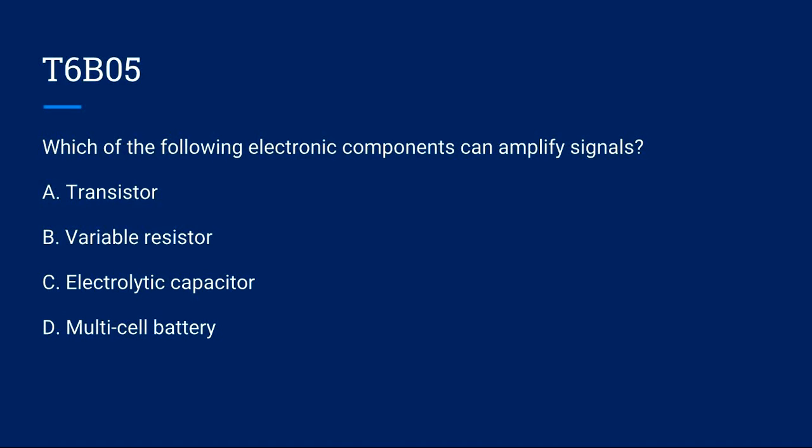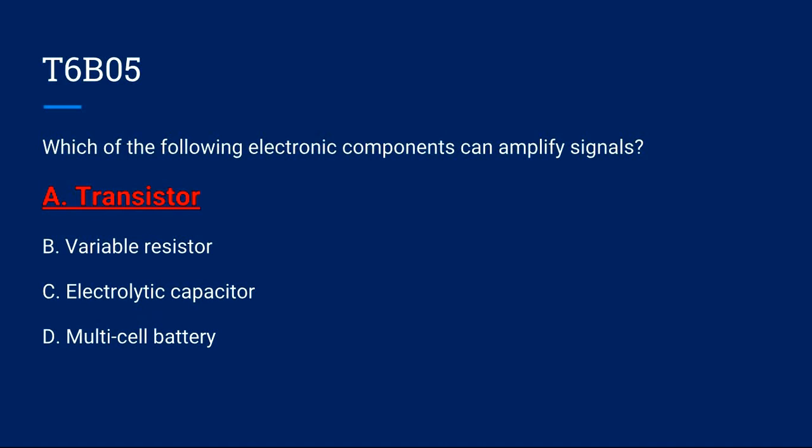T6B05: Which of the following electronic components can amplify signals? A, transistor. B, variable resistor. C, electrolytic capacitor. Or D, multi-cell battery? The correct answer is A, transistor.